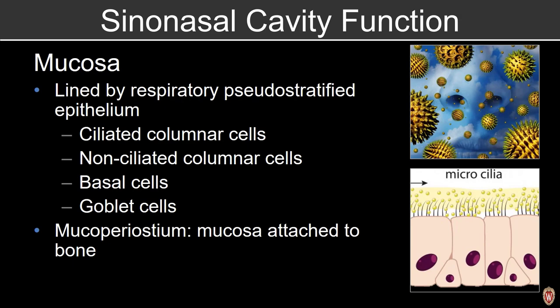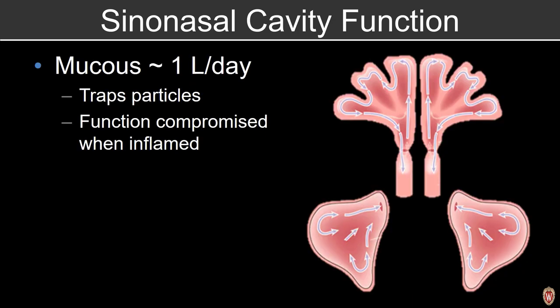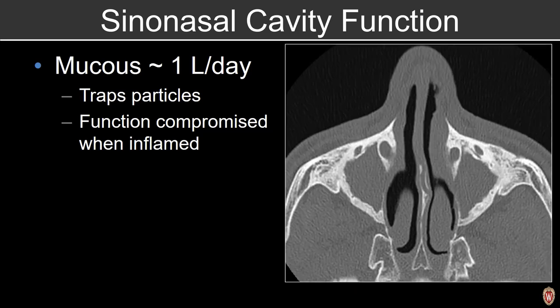The sinonasal cavity is lined by a respiratory pseudostratified epithelium made up of four different cell types. This mucosa attaches to bone and is referred to as the mucoperiosteum. The mucosa produces about a liter of mucus per day, and the function is to trap particles, and it's compromised when it's inflamed, as we see in this example with thickening of the walls and opacification of the maxillary sinuses in this patient with chronic sinusitis.